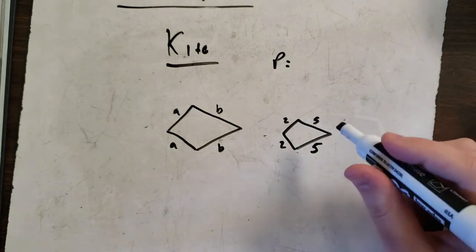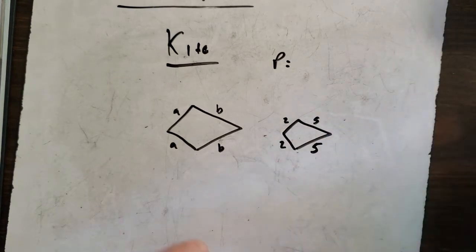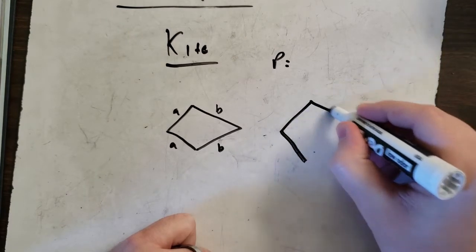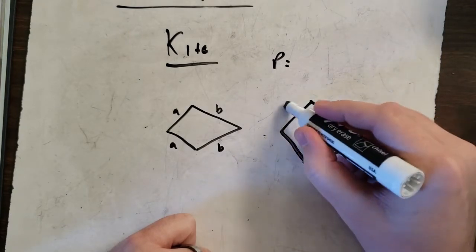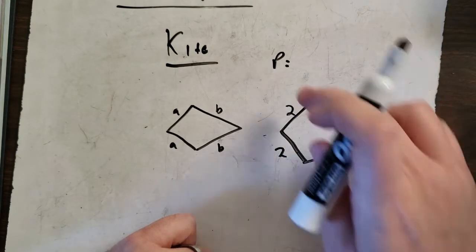This is really small. I don't know why it's small. Sorry about that. Here we go. 2, 2, 5, 5. Now, perimeter, add the sides.